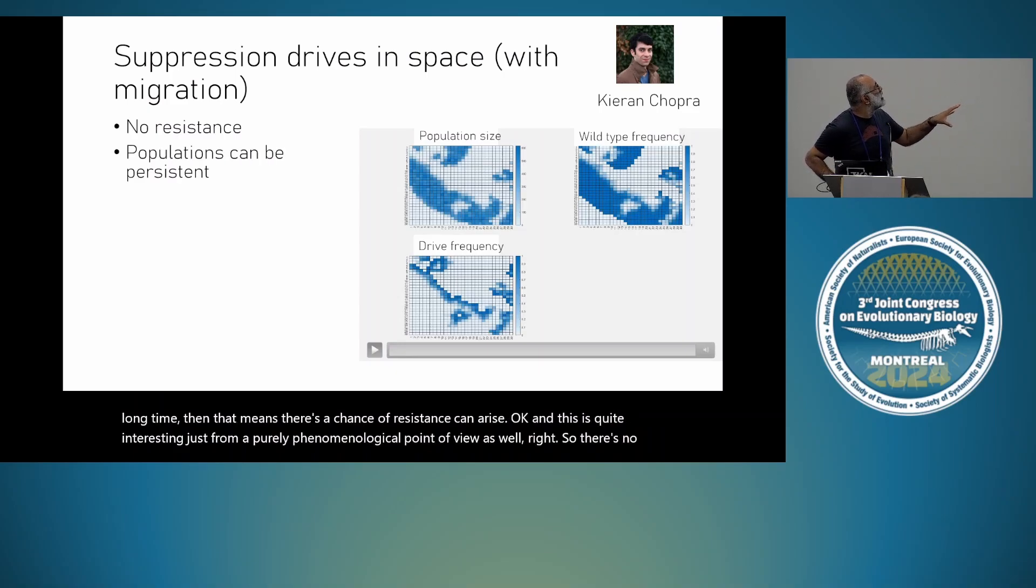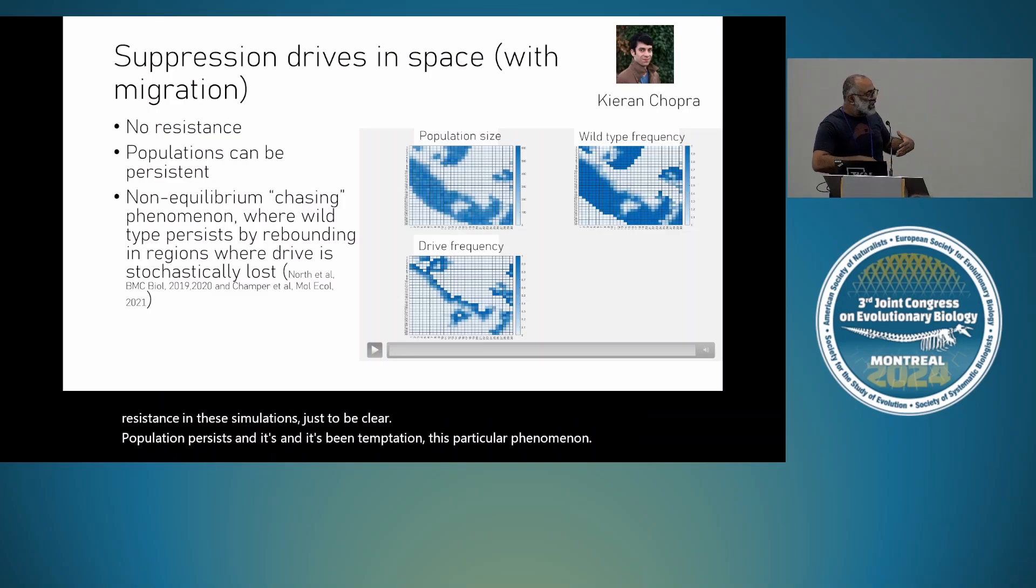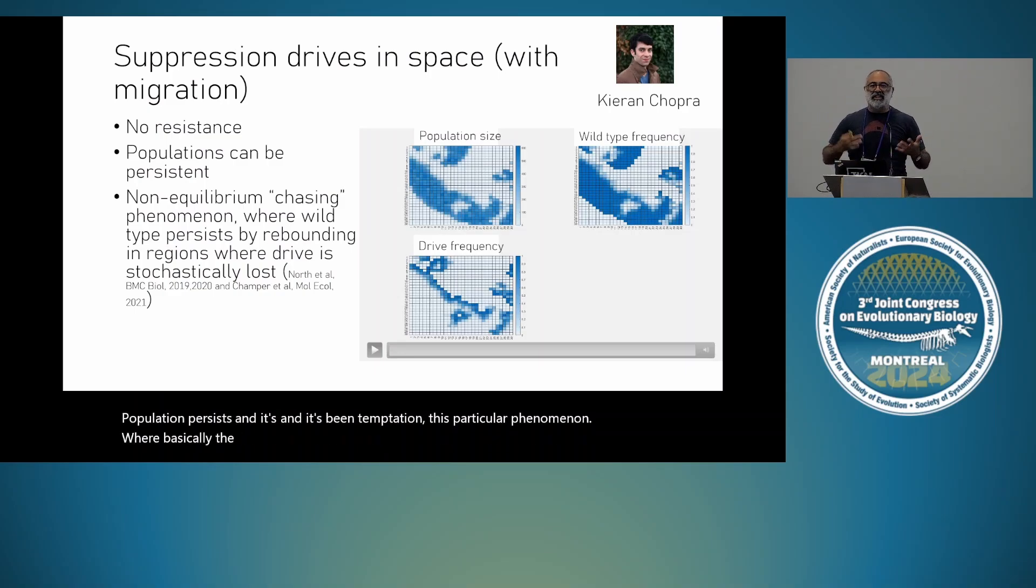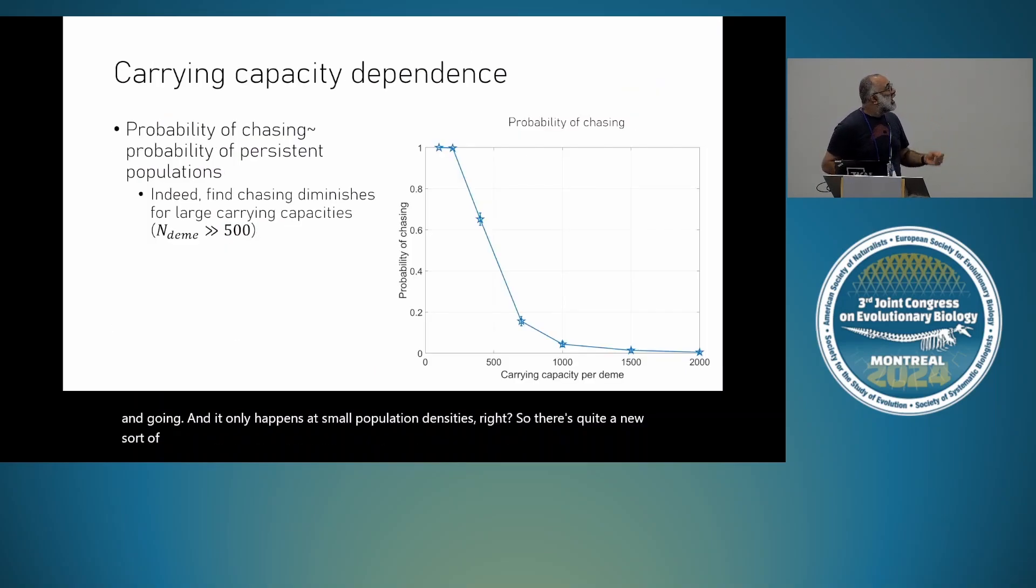This is quite interesting just from a purely phenomenological point of view as well. There's no resistance in these simulations, just to be clear. The population persists. And it's been termed chasing, this particular phenomenon, where basically the wild-type can basically persist by colonizing empty space. And then it takes drive some time to catch up and then suppress it again. And it keeps going and going. And it only happens at small population densities. So there's quite a new sort of phenomenon. And so we see this in practice. If you look at the probability of chasing as a function of carrying capacity for deme with a population density, we do indeed see that large carrying capacities, it diminishes and the probability of chasing goes to zero.